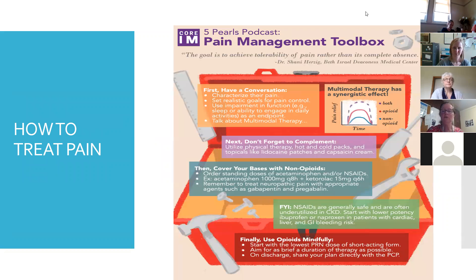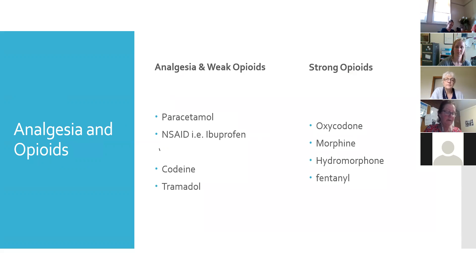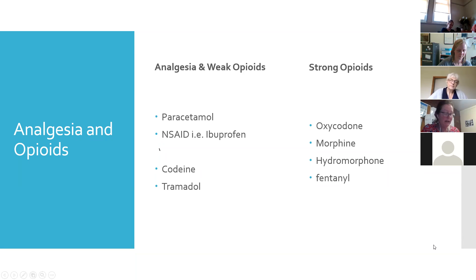So how do we treat pain? What is the most effective management of pain? Our mainstay of treatment is usually the use of analgesia, though not the only treatment. The choice of analgesia is usually based on the type and severity of pain. Mild pain is usually managed with analgesia, and our two main analgesics are paracetamol and non-steroidal anti-inflammatory drugs — the most common being ibuprofen, or Nurofen as you might know it.